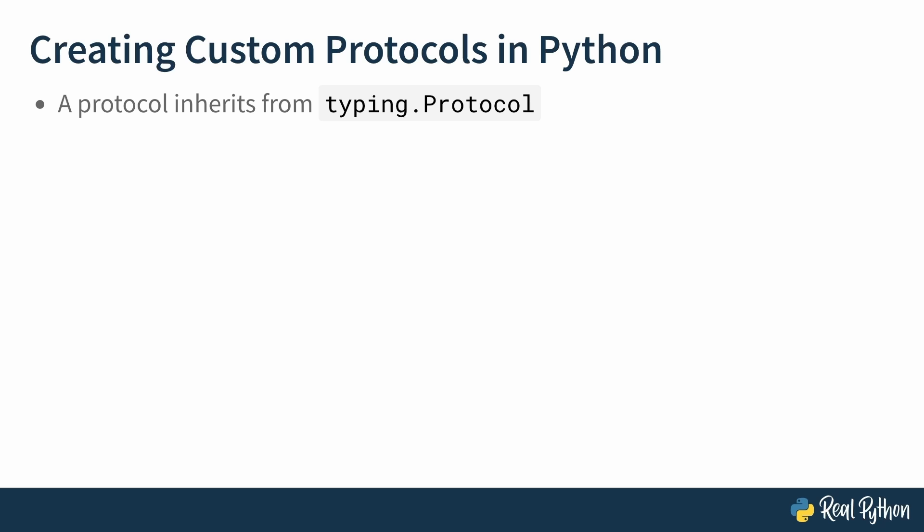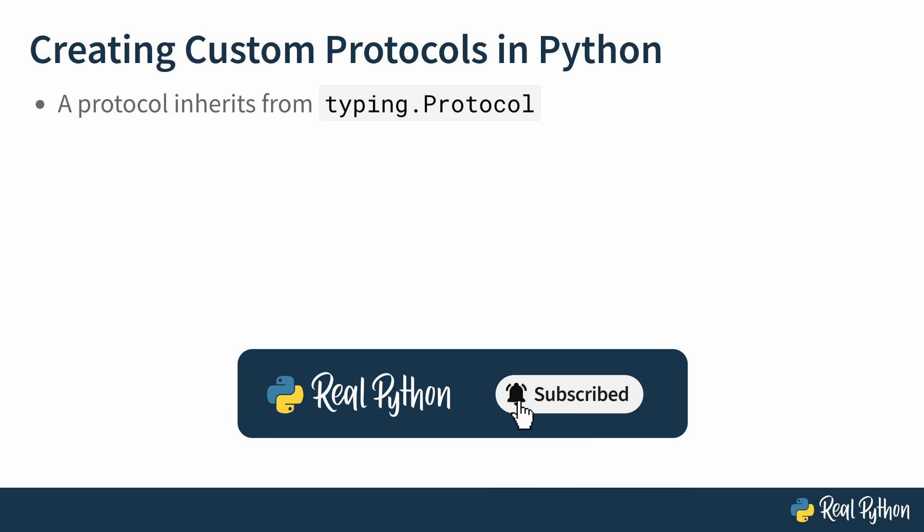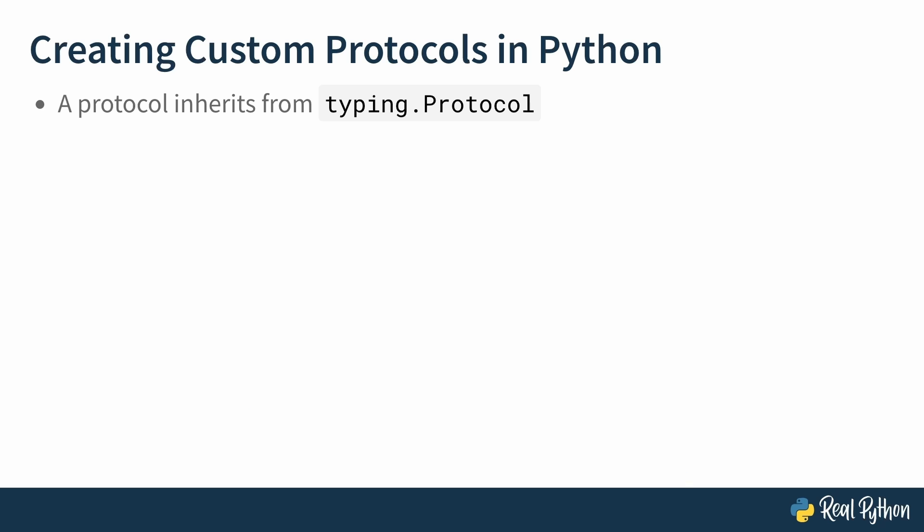After understanding what protocols are useful for and what's the point, really, the next step is knowing how to create custom protocols in Python. And a protocol really is just a class that inherits from typing.protocol, where typing is the module from the standard library. So you define a class that inherits from protocol, and in that class you define a series of methods that represent this behavior that the other classes must implement. For example, for our walkers it was walk and run, and for our swimmers it was dive and swim. So this is all there is to it.